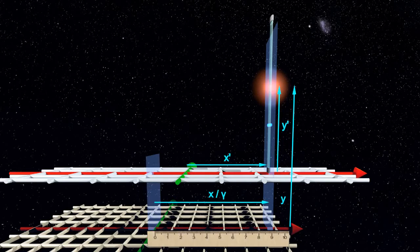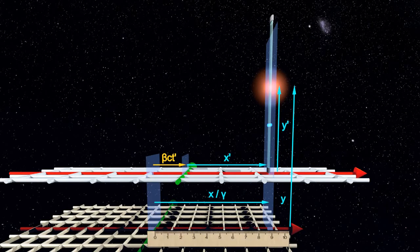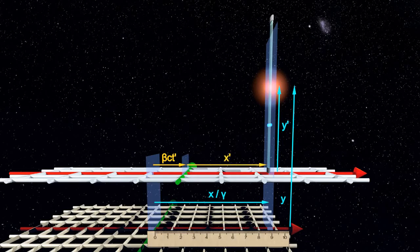Therefore, the sum of the relative frame displacement and the coordinate in the current frame equals the length contracted coordinate in the other frame.